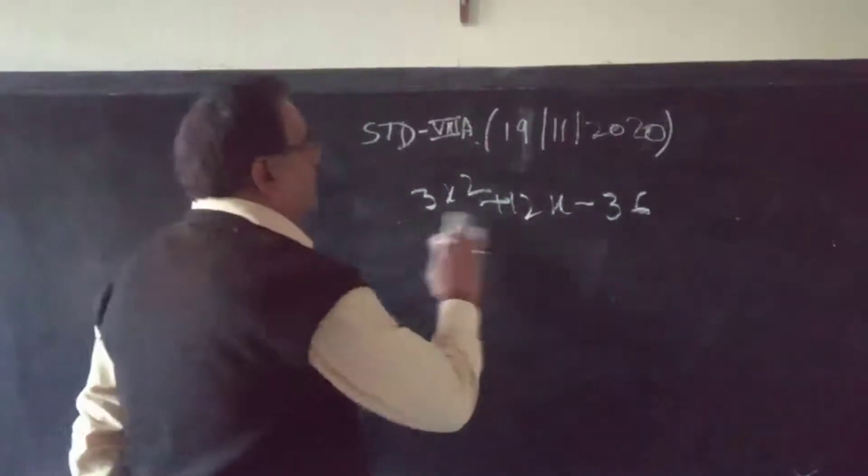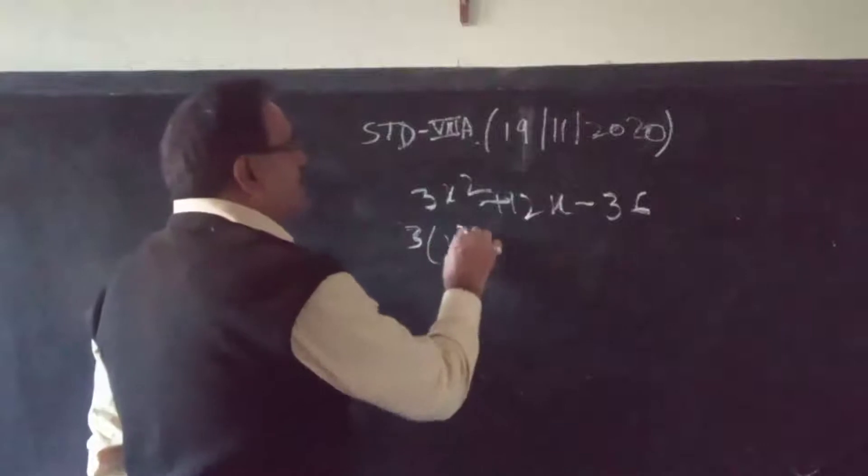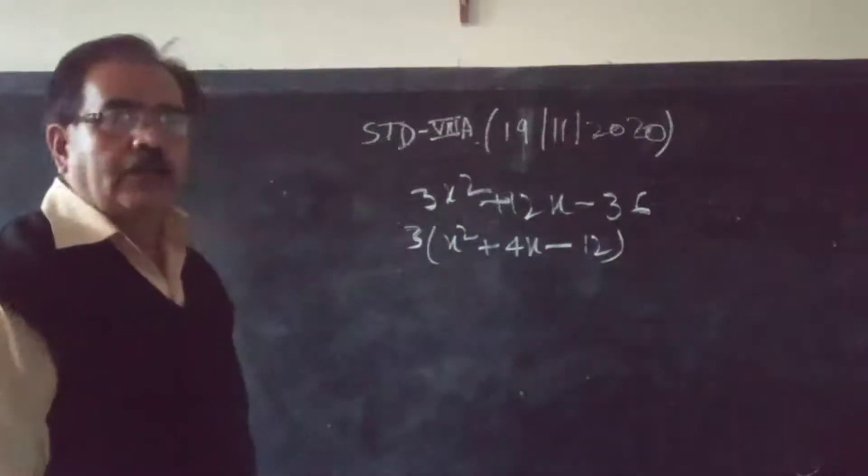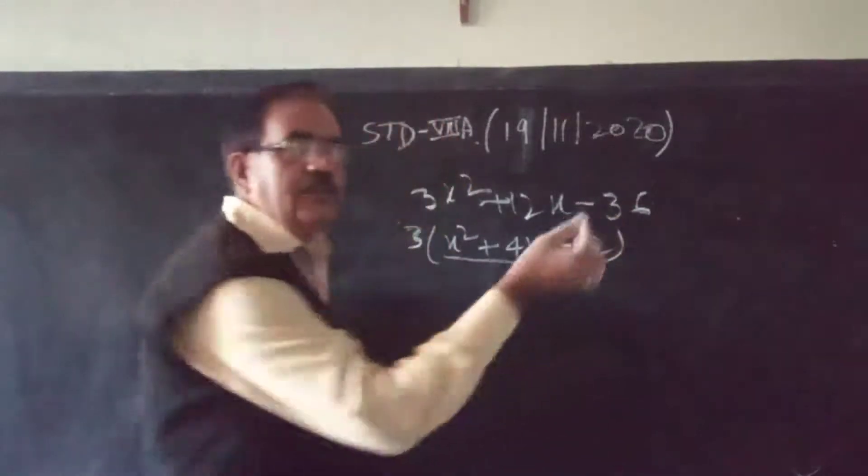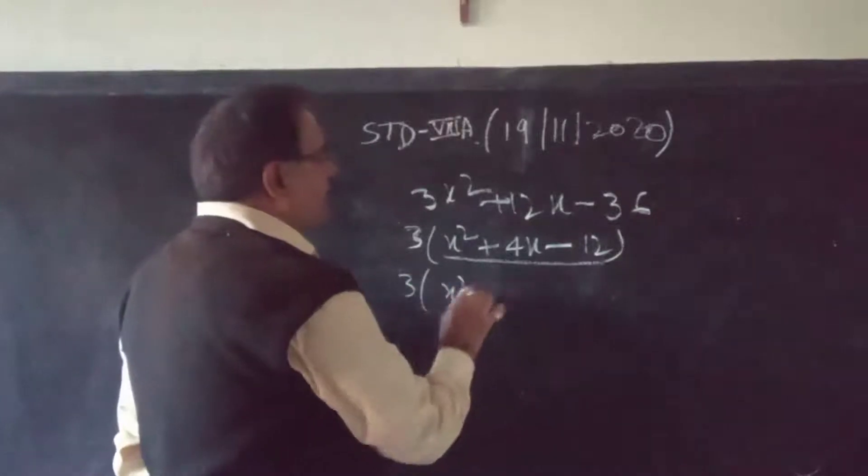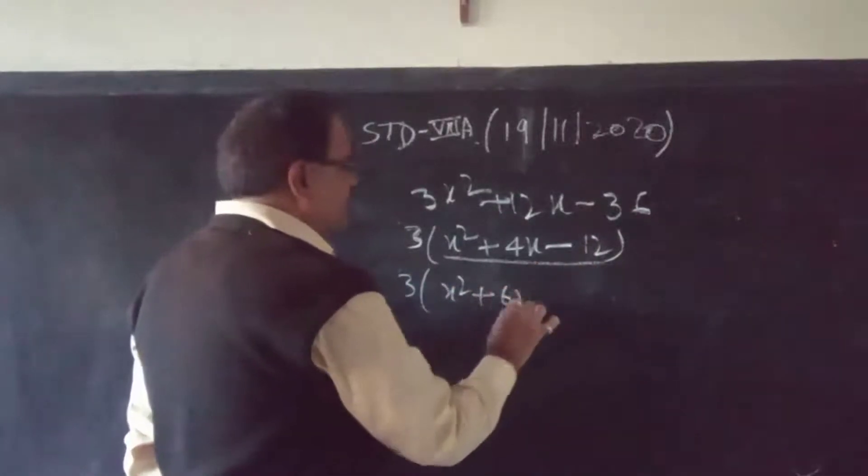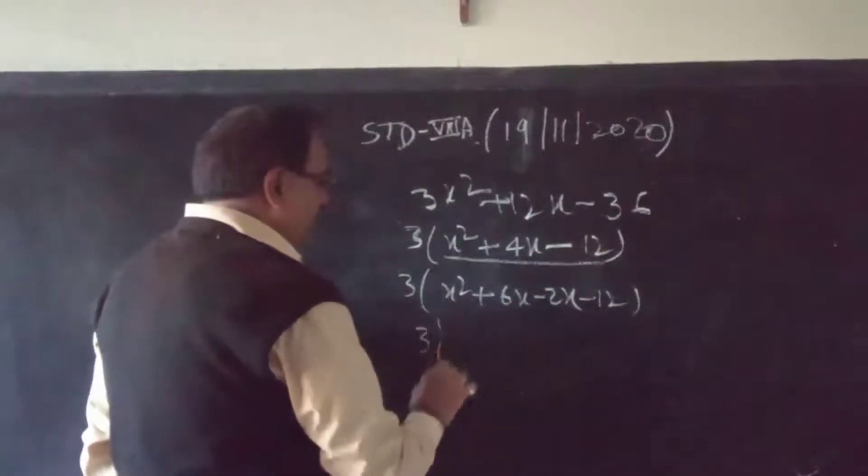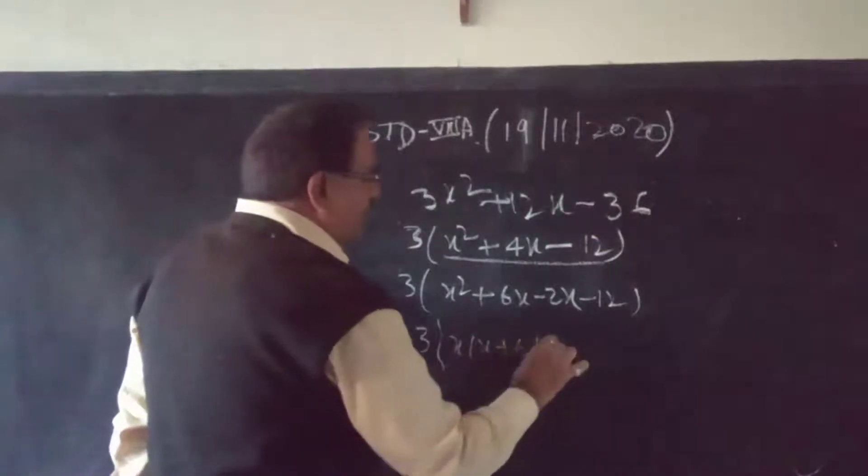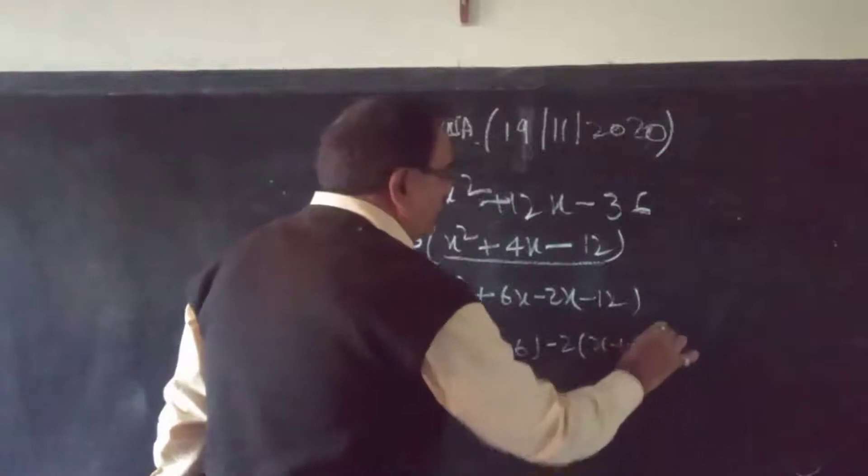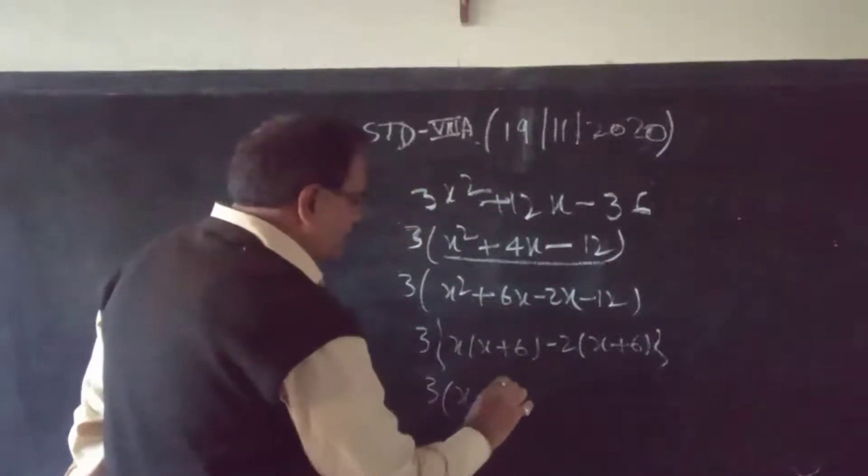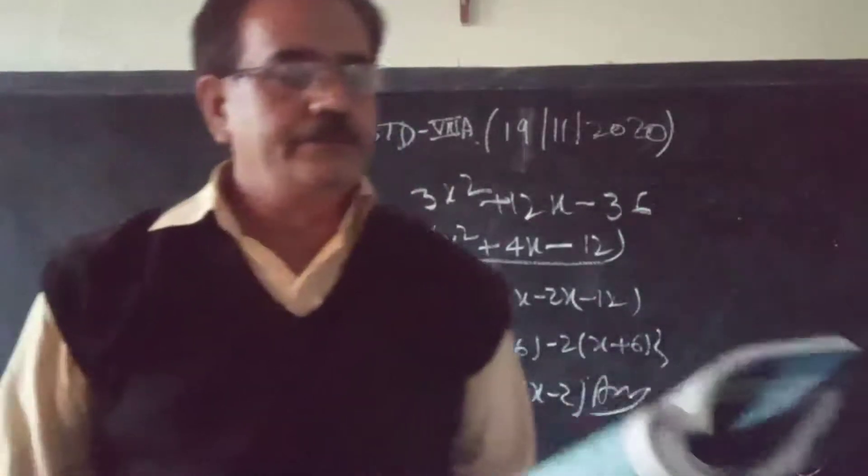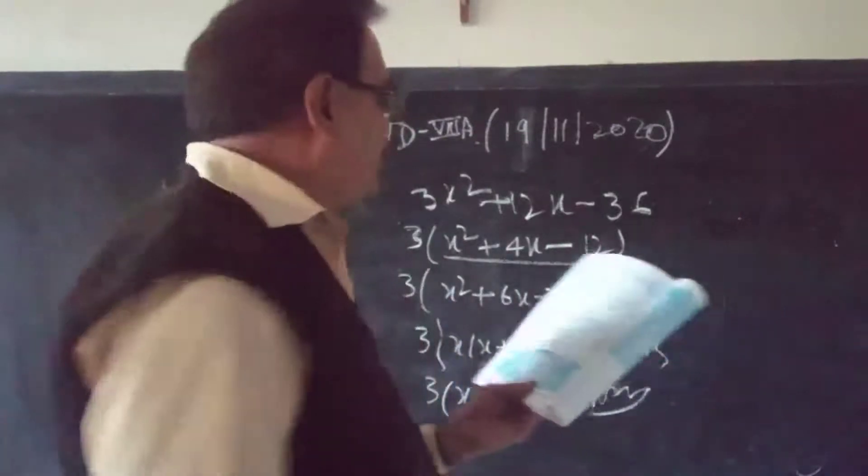Next: 3x squared plus 12x minus 36. Common factor is 3, so it becomes x squared plus 4x minus 12. Then split this carefully. 3 times 12, so we can write 6x minus 2x. So 3x squared plus 6x minus 2x minus 12. Factor as 3 times x times x plus 6, minus 2 times x plus 6. So 3 times x plus 6 times x minus 2. This is our answer. You can see how easy this chapter is.